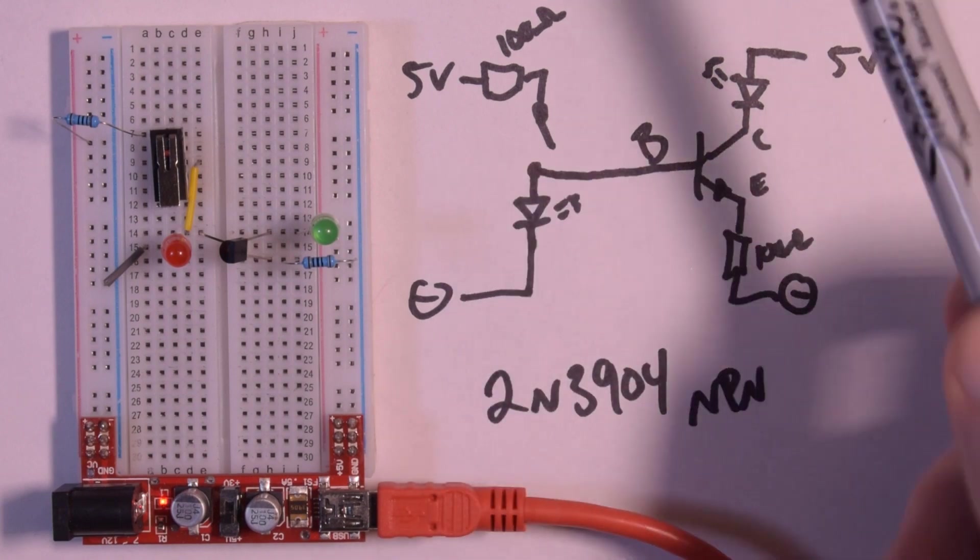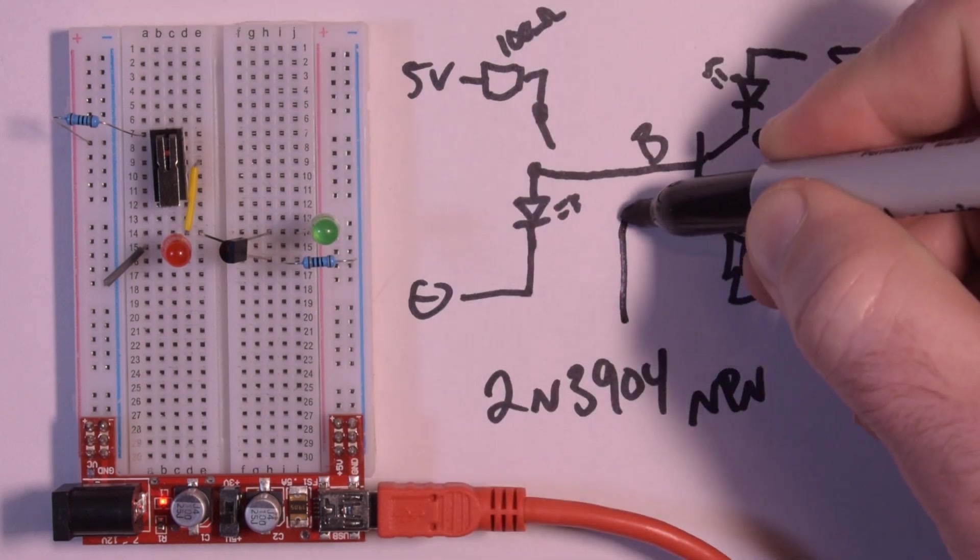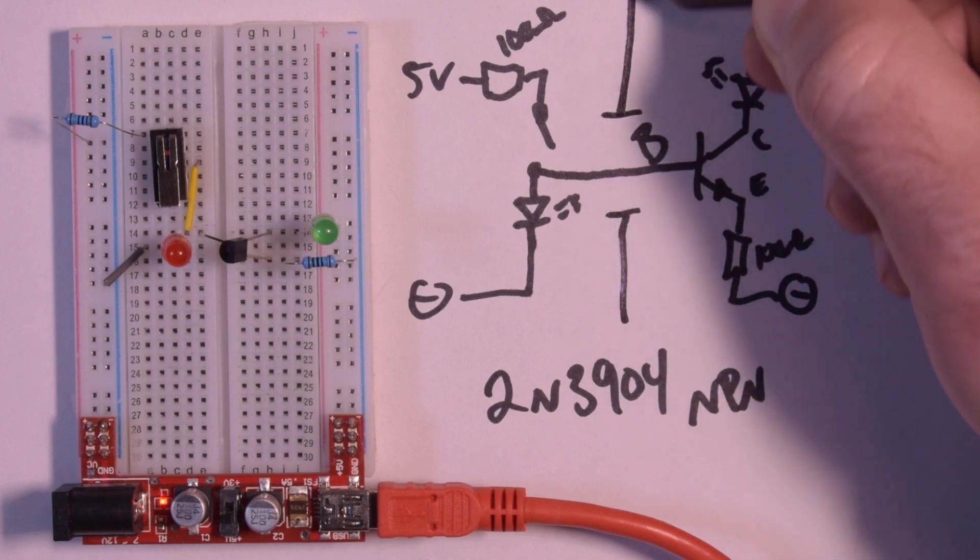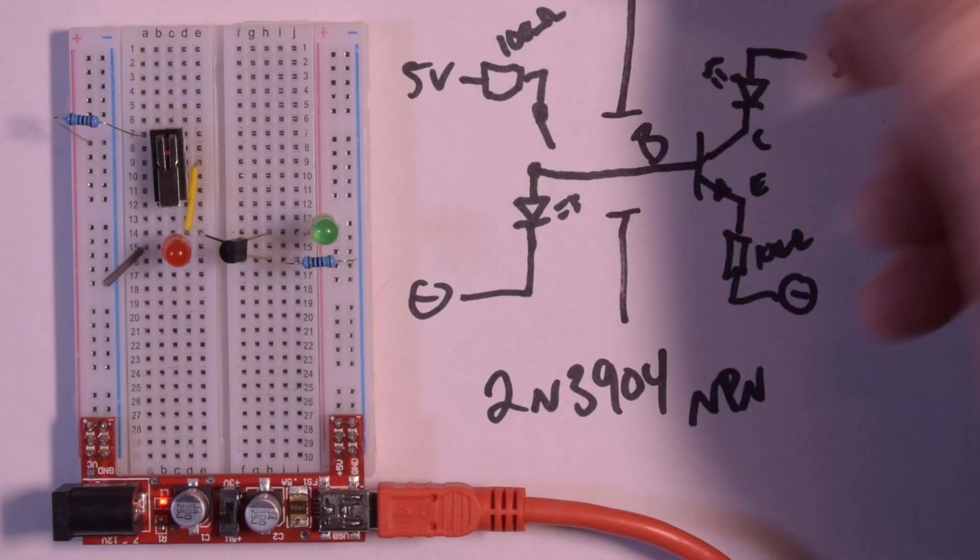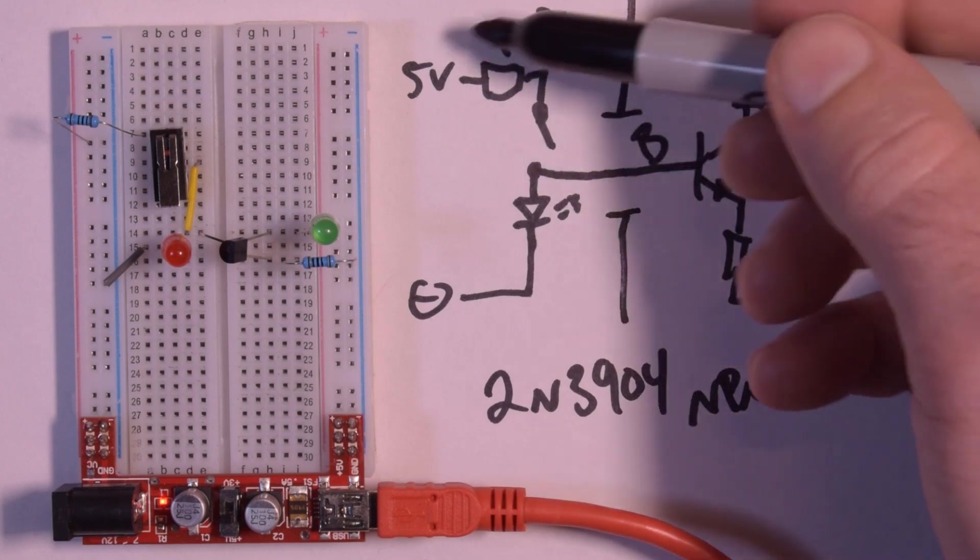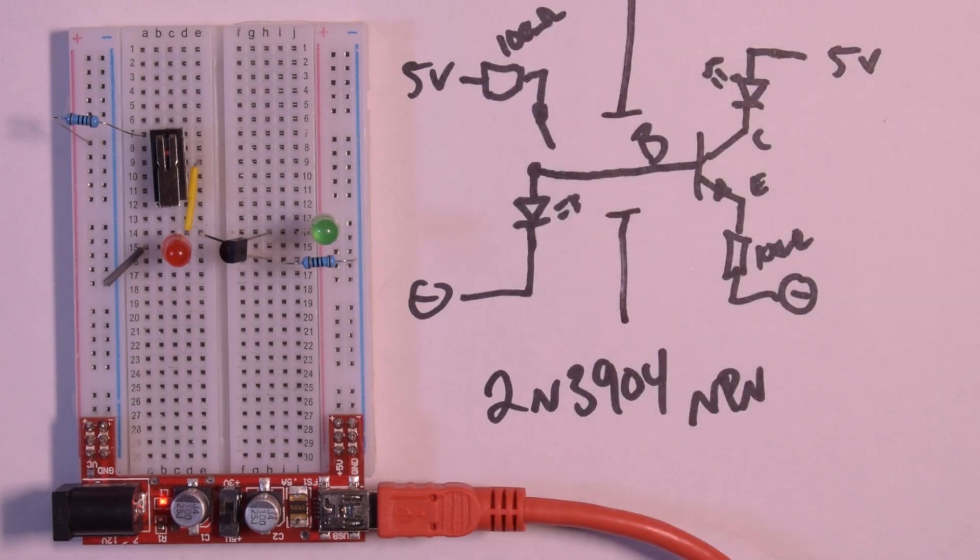I mean we've got nearly 5 volts coming through here from this side to this side. So that isolation is now broken, so we don't have anything to stop current from coming from this side to the other. And this here is where the PC817 comes in.